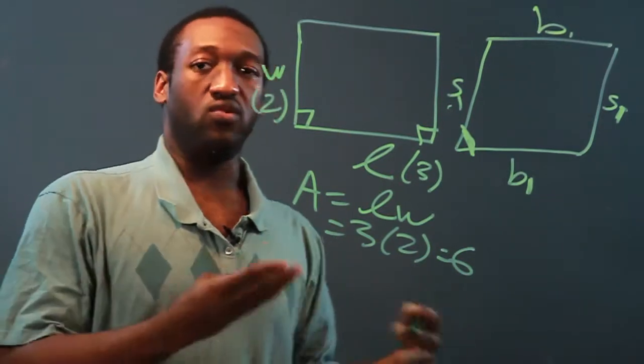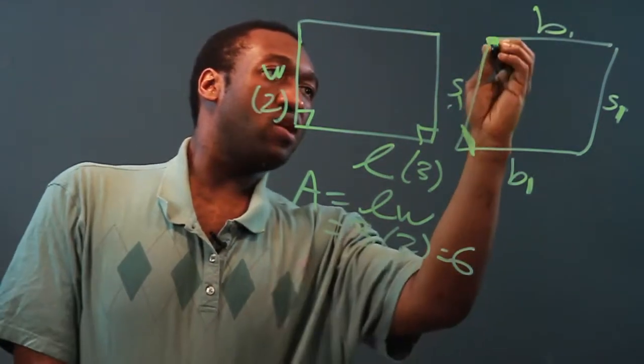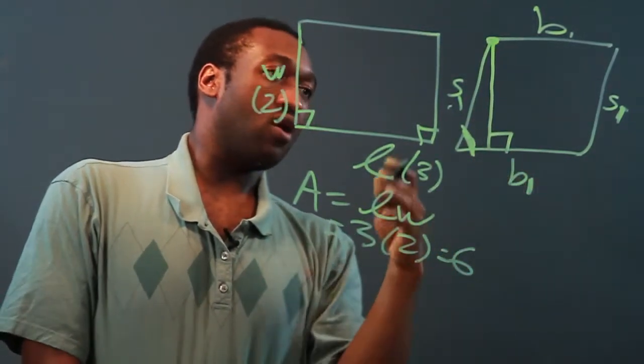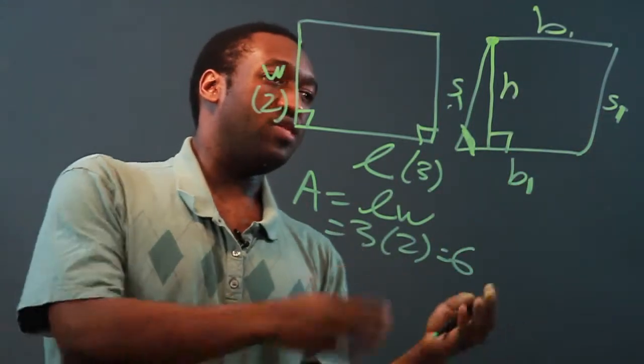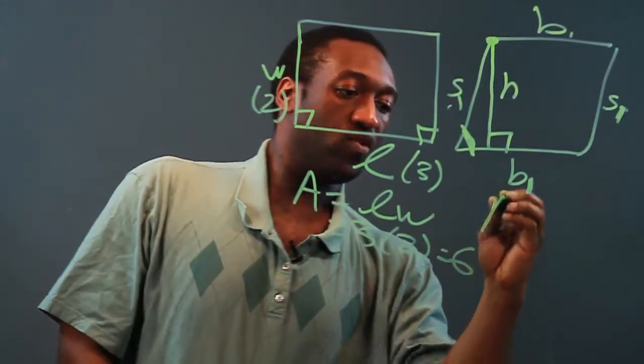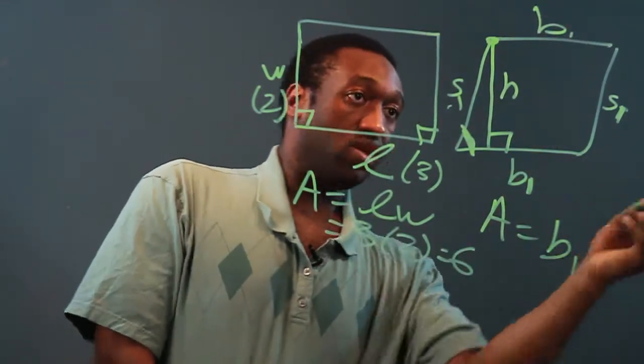But we need a 90-degree angle, so what we do is we go from the corner of base 1 and go straight down to make our 90-degree angle. And this will be the height. So then, we're going to do for area, base 1 times the height.